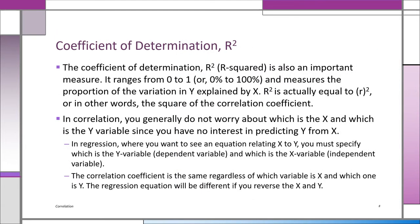If we square the correlation coefficient R, we get something called R-squared—the coefficient of determination. Remember, R can go from negative one to positive one, but when you square it, you only have a positive number—in fact, a percentage. The definition of R-squared is the proportion of the variation in Y explained by X.